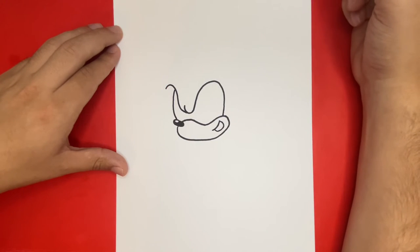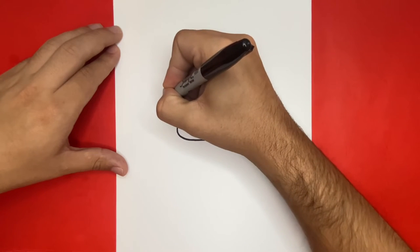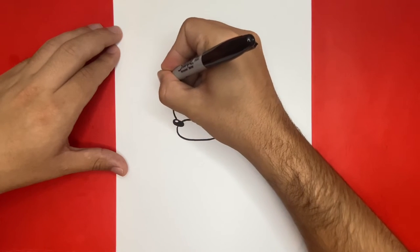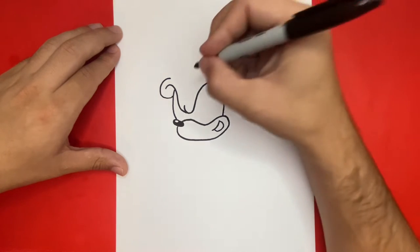Next, we'll draw the eyebrows, beginning on the left-hand side by drawing a small curved line that will attach to the eye and go right above. A little over to the right, let's draw the second eyebrow by making a second curved line.